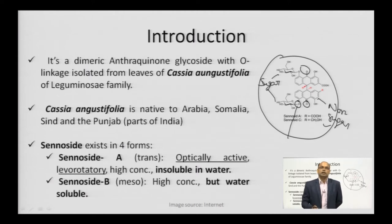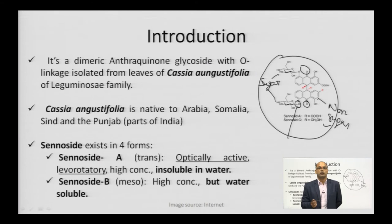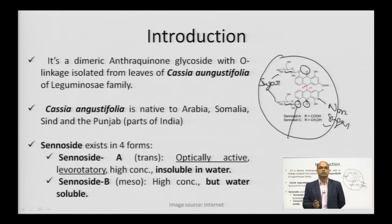Looking at the distribution of Cassia angustifolia, this plant is distributed in the west of India. If you look at the Indian territory, you can find this plant widely in various parts of west Punjab. It is also cultivated in Arabia, Somalia, and Sindh. The plant is native to Arabia or the Arab Emirates.